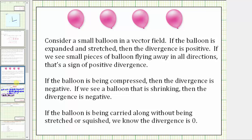If we consider a small balloon in a vector field: if the balloon is expanded or stretched, the divergence is positive — we'd see small pieces of balloon flying away in all directions. If the balloon is being compressed and shrinking, then the divergence is negative. And if the balloon is being carried along without being stretched or squished, we know the divergence is zero.